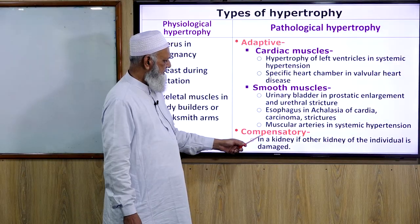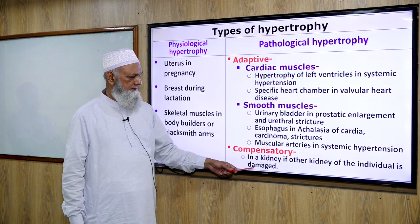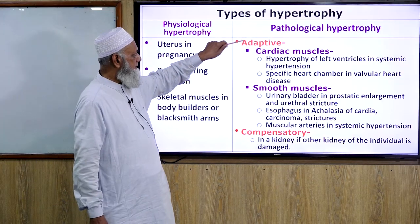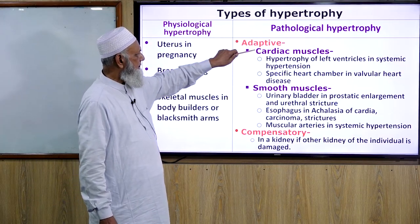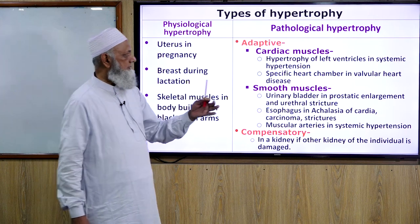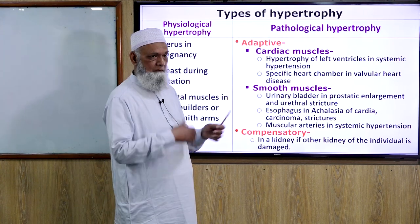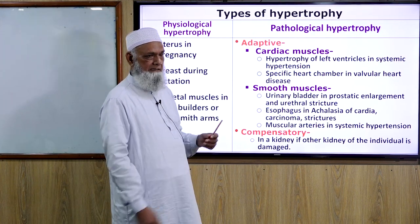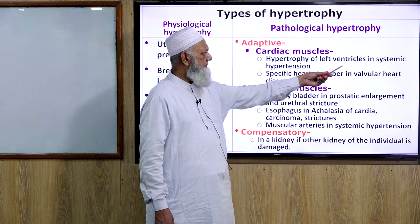Compensatory hypertrophy occurs in the other kidney when one kidney is damaged. Adaptive hypertrophy involves cardiac and smooth muscle. Cardiac hypertrophy results from obstruction due to any cause or over-activity of the heart.